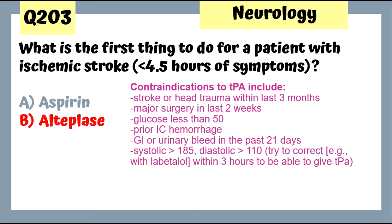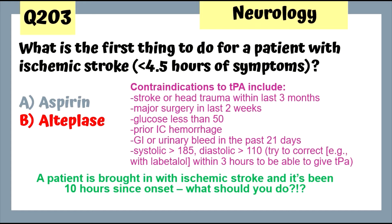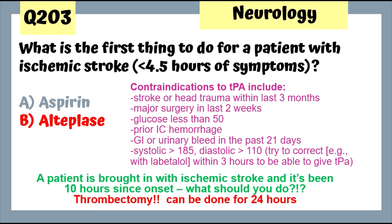Contraindications to TPA include stroke or head trauma within the last three months, major surgery within the last two weeks, glucose less than 50, prior intracranial hemorrhage, GI or urinary bleed in the last three weeks, and high blood pressure — systolic above 185 and diastolic above 110. If a patient presents with ischemic stroke and it's been 10 hours since onset so we can no longer give TPA, the next step is thrombectomy — look for a thrombus and remove it; this can be done within the first 24 hours.